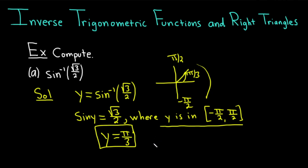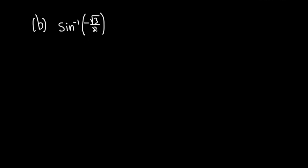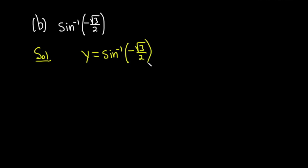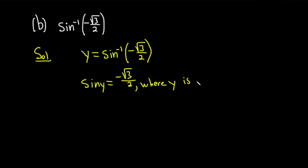Let's do another example. Part B: we have sine inverse of negative √3/2. Again, carefully working through the solution — step 1, call it y. So y equals sine inverse of negative √3/2. That means the sine function takes y and sends it back to negative √3/2, where y is in negative π/2 to π/2 — that same interval for the inverse sine.